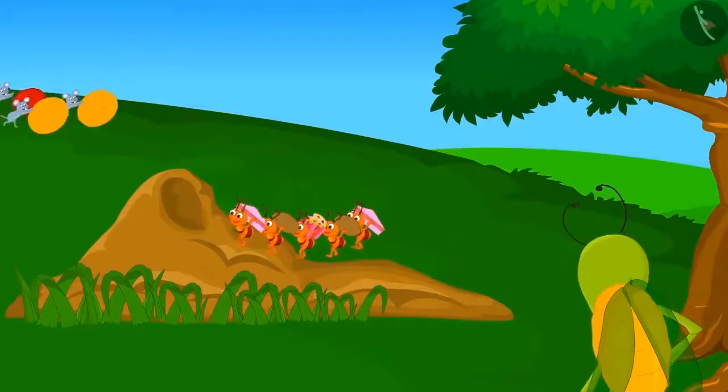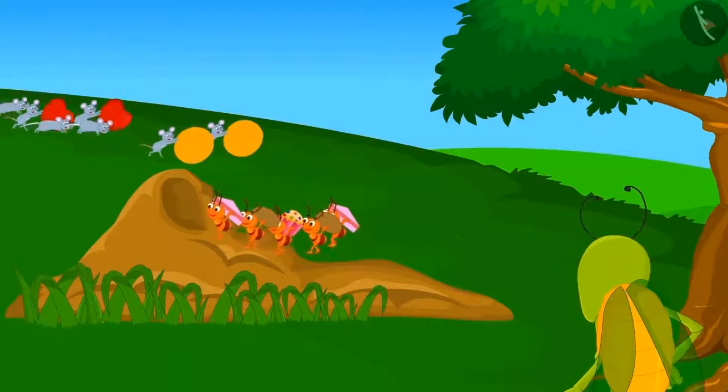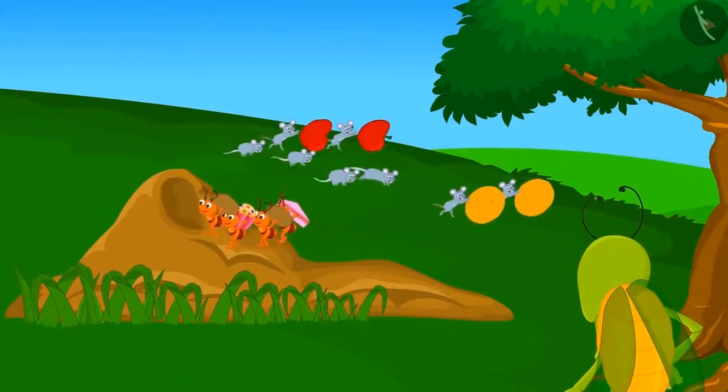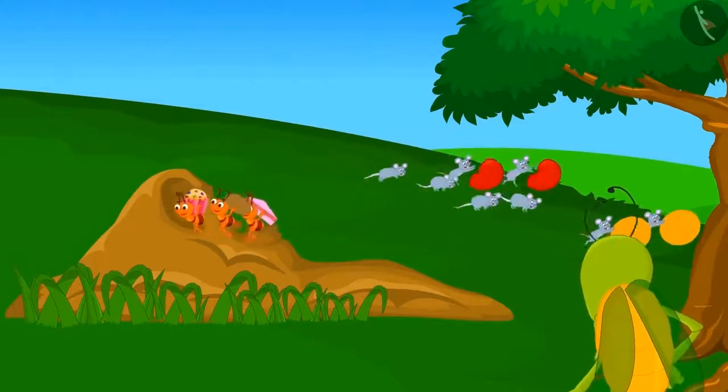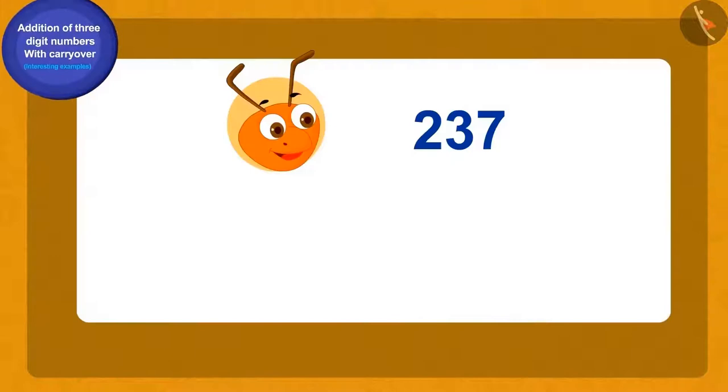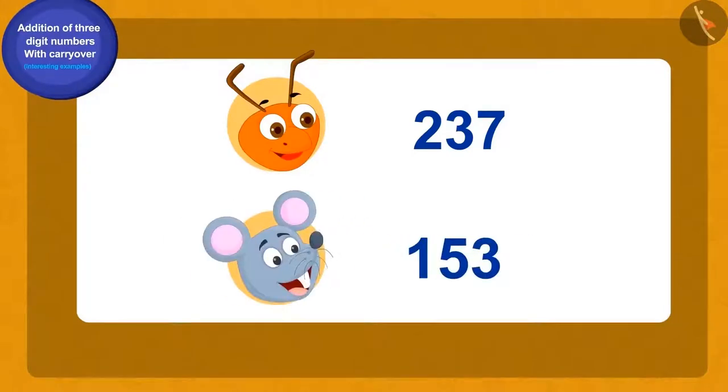Suddenly he saw a herd of ants and mice. The ants and mice were carrying pieces of some food items. There were 237 ants and 153 rats. Can you tell how many total animals were there in the herd?